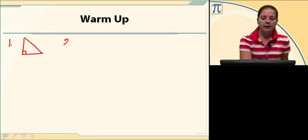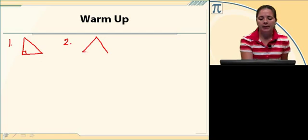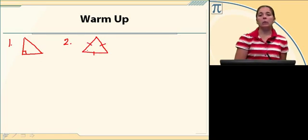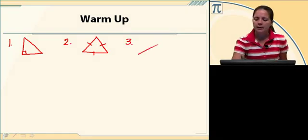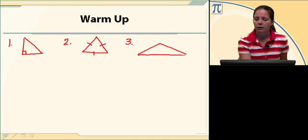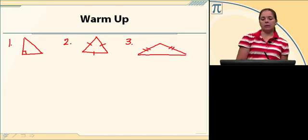The next one, equilateral triangle. Equilateral means that all three sides have to be congruent. So there's an equilateral triangle. An isosceles triangle — isosceles just means that at least two sides have to be congruent. So there's an example of an isosceles triangle.